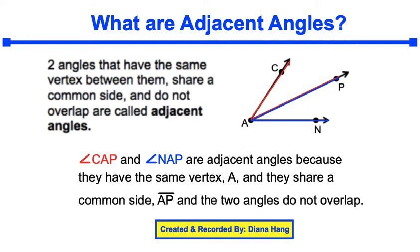In this video tutorial we will be discussing what are adjacent angles. Let's look at the definition. Two angles that have the same vertex between them, that share a common side, and do not overlap are called adjacent angles.